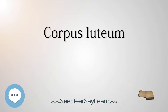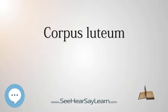The corpus luteum, Latin for yellow body, plural corpora lutea, is a temporary endocrine structure in female ovaries and is involved in the production of relatively high levels of progesterone, moderate levels of estradiol, inhibin A, and small amounts of estrogen.